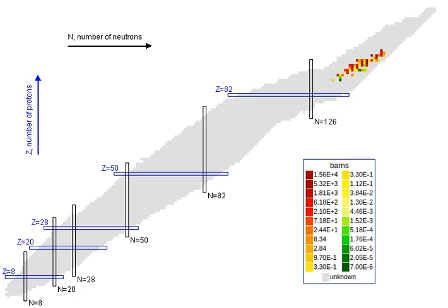Fissile nuclides in nuclear fuels include uranium-235, which occurs in natural uranium and enriched uranium.